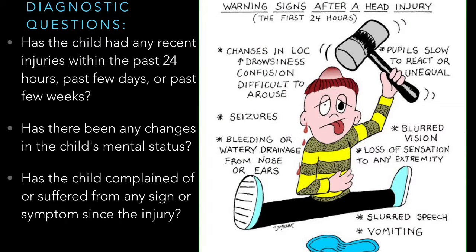Now that we have an understanding of what constitutes a pediatric head injury and who is at risk, three key diagnostic questions necessary when a child presents in the primary or acute care setting include: Has the child suffered from a recent incident where a mechanism of injury was inflicted directly or indirectly to the child's head? Has there been any changes in mental status like abnormal sleepiness, confusion, lethargy, or alterations in mentation? And has the child complained of or suffered from any sign or symptom like headache, vomiting, blurred vision, slurred speech, or seizure event? These questions allow for a heightened index of suspicion that the patient has potentially suffered from a head injury and its potential progression.